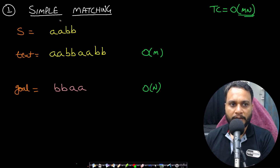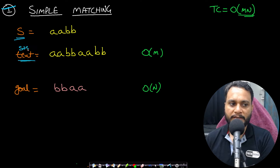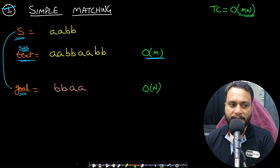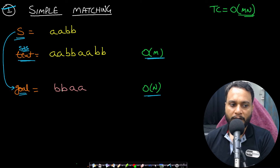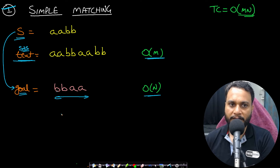Now let's apply the simple matching approach. Say our given string s is 'aabb'. We create a text by doing s+s, giving 'aabbaabb' of size m. Our goal — say 'bbaa' of length n — is the pattern we want to find as a substring in the text. We can use a built-in find operation or start matching from the beginning.